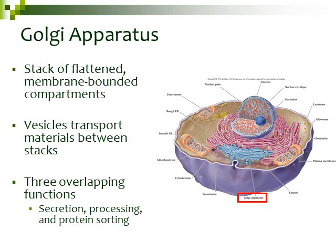Next to our endoplasmic reticulum, we have another structure called the Golgi apparatus. In the diagram, the Golgi apparatus is the blue structure in the cell. The Golgi apparatus is kind of similar to the endoplasmic reticulum — we have a stack of flattened membrane-bound compartments, and there are vesicles that transport materials from one compartment to another through the Golgi apparatus.